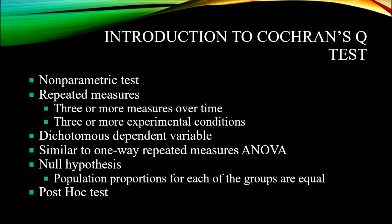Then you expose them to another treatment — one that teaches skills regarding developing healthy relationships — and 24 hours later you ask that same question. You collect those responses and deliver a third treatment: group therapy. So here you have three experimental conditions: the coping skills, the building healthy relationships, and the group therapy. After each condition, you use the same assessment regarding substance use, collecting yes or no responses.